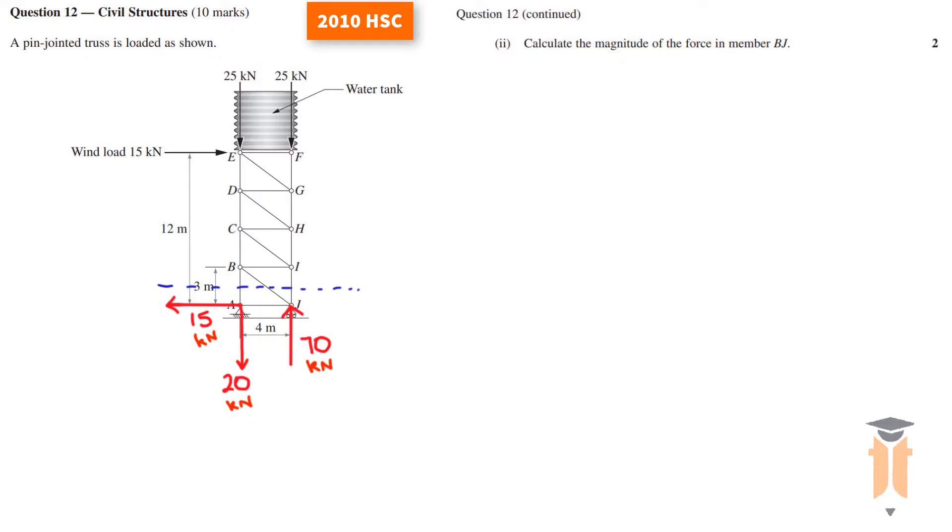Now I need to draw a free body diagram. So we have this force going down, force going to the left. AB is cut so that becomes a force. AJ stays intact. IJ is also being cut so that becomes a force. And BJ is also cut. We've got a force on J which is up and that's 70. This is 20 and this is 15.